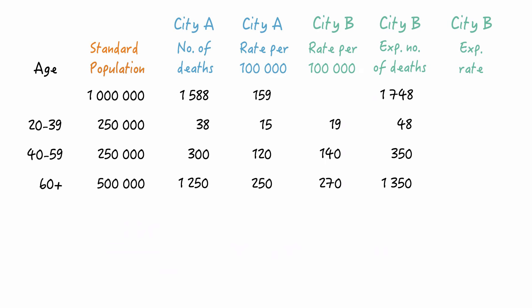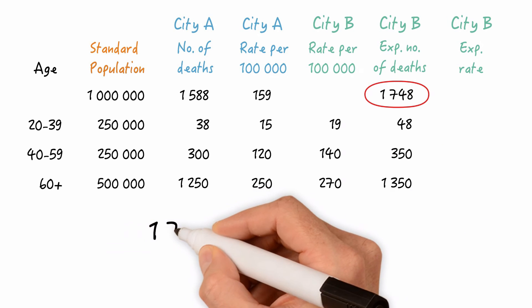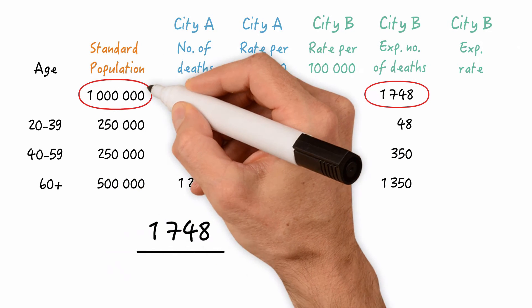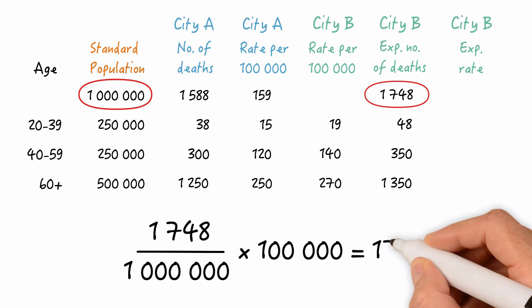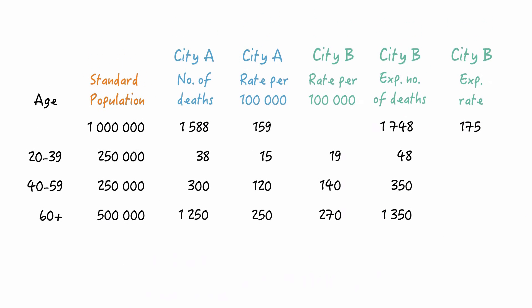And what would be the overall death rate per 100,000 population? That's 1,748 divided by 1,000,000 times 100,000. So, 175. This means that the age-adjusted death rate using city A as the standard population would be 175 per 100,000.